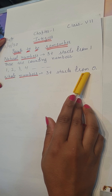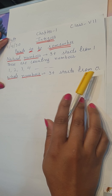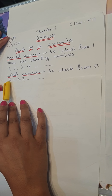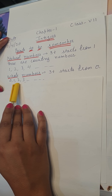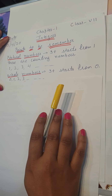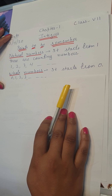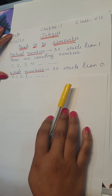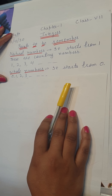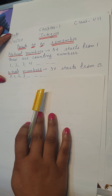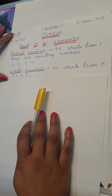Next is whole numbers. Whole numbers start from 0, like 0, 1, 2, 3 and so on. And next is about integers.